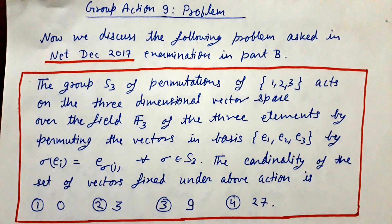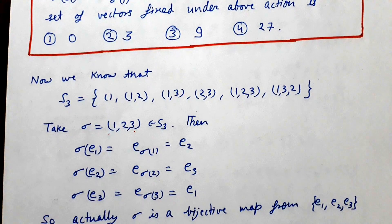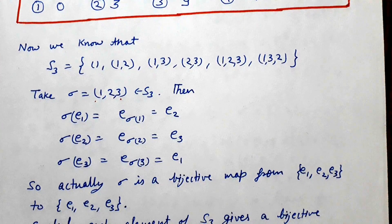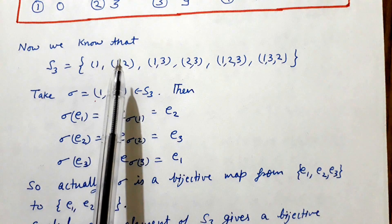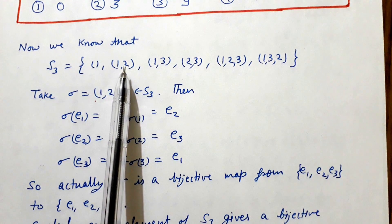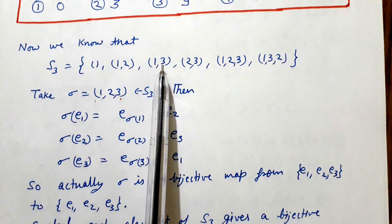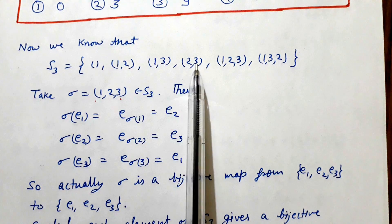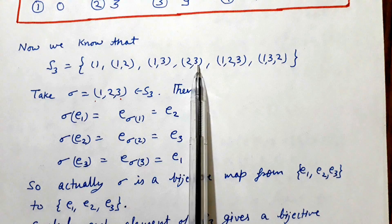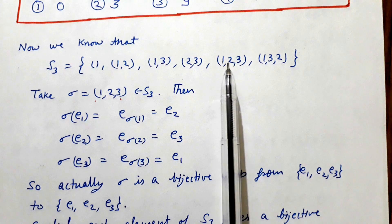Before solving, let us recall S3. S3 is the group having the identity element, the transposition (1 2) where 1 goes to 2 and 2 goes to 1, the transposition (1 3) where 1 goes to 3 and 3 goes to 1 and 2 is fixed, the transposition (2 3) where 2 goes to 3 and 3 goes to 2 and 1 is fixed, the 3-cycle (1 2 3) where 1 goes to 2, 2 goes to 3, and 3 goes to 1.